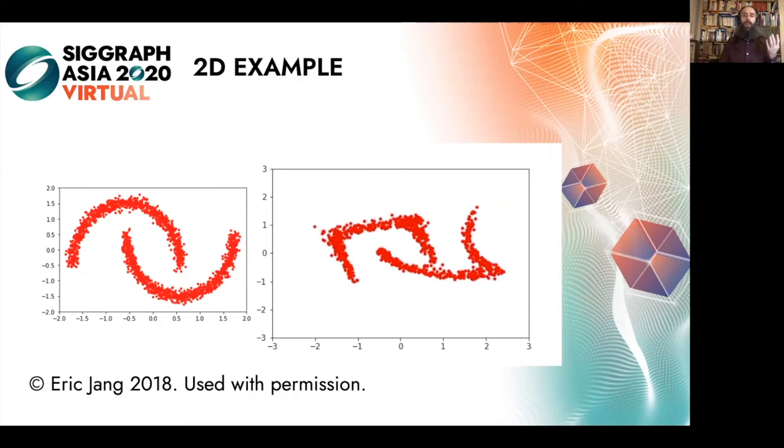Here's an example where we generate the two moons data set from a Gaussian distributed point cloud by transforming it with four steps of flow. Let's animate what that looks like. We see there's stretching and compressing in different areas depending on the value. This way we can achieve a lot of flexibility in our transformation.